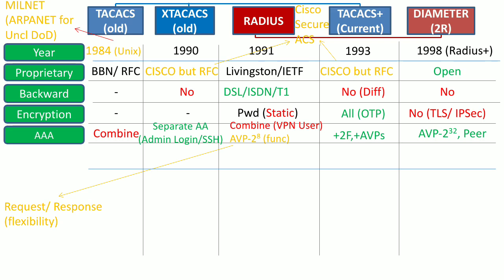Diameter uses 32-bit attribute value pairs, so the number of services and functionality it supports are a lot greater than RADIUS. Moreover, Diameter uses peer-to-peer architecture, whereas all other four technologies use client-server architecture where only the client can initiate the request. But in Diameter, the Diameter server can also request authentication from the user.